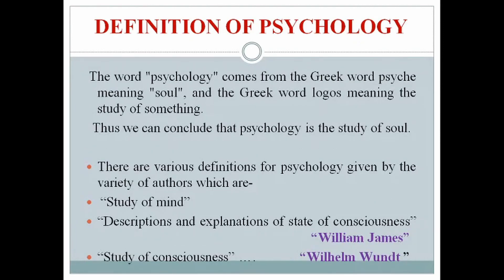The word psychology comes from the Greek word 'psyche,' meaning soul, and 'logos,' meaning study of something. Thus, psychology is literally the study of the soul. Various definitions have been proposed: William James defined it as descriptions and explanations of states of consciousness, while William Wundt defined it as the study of consciousness. Simply put, psychology is the study of the soul, mind, or consciousness.